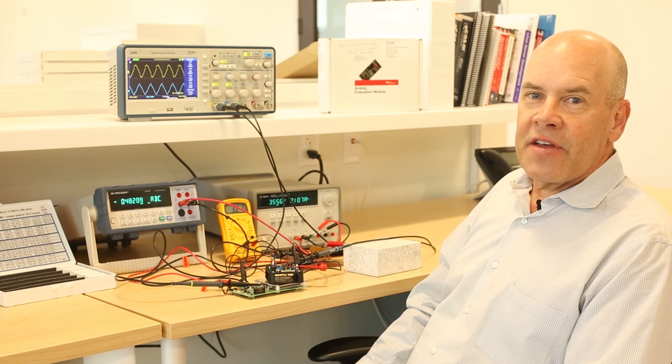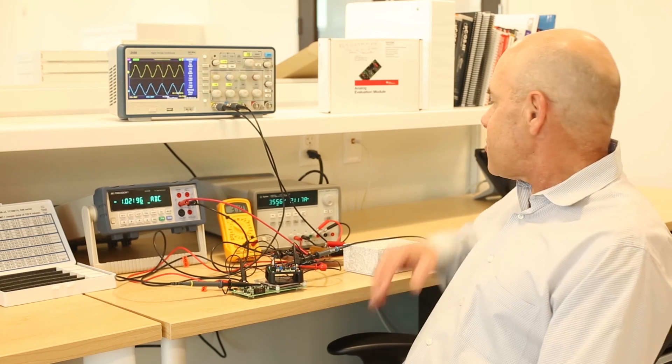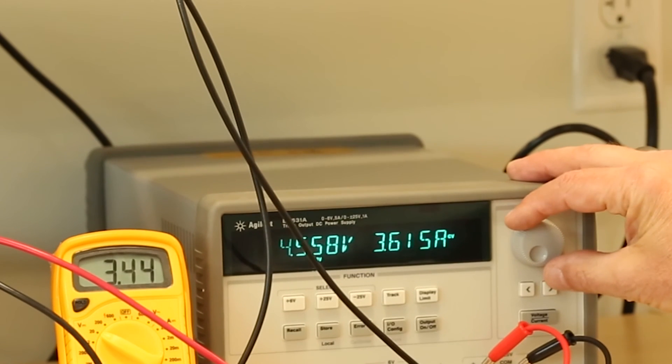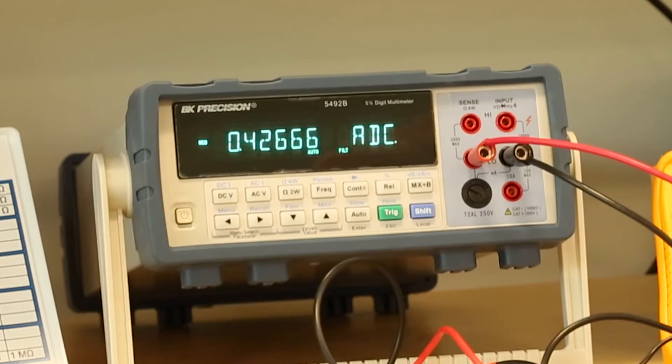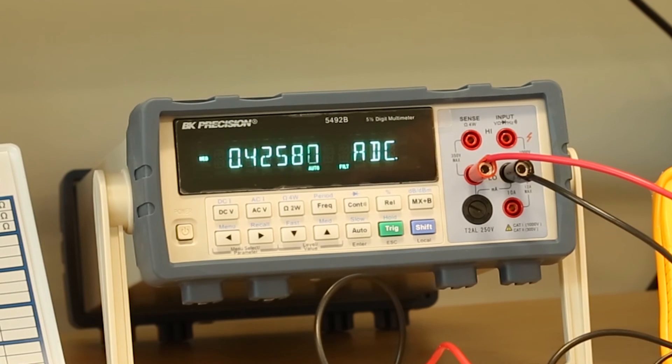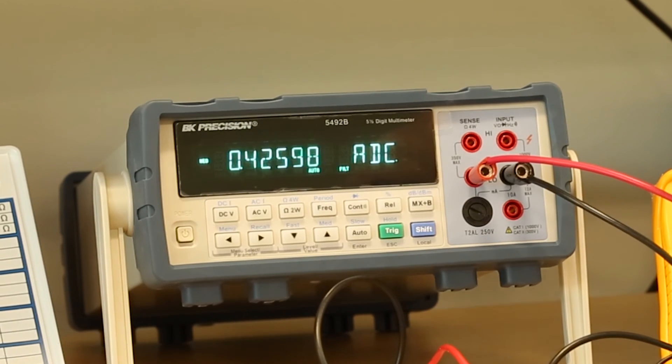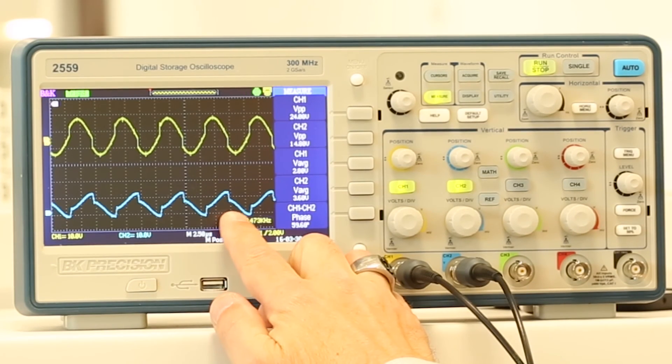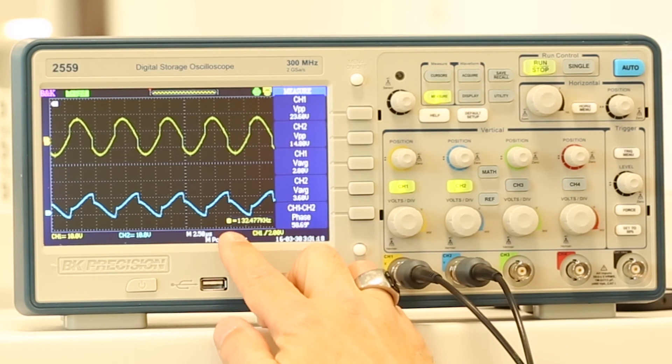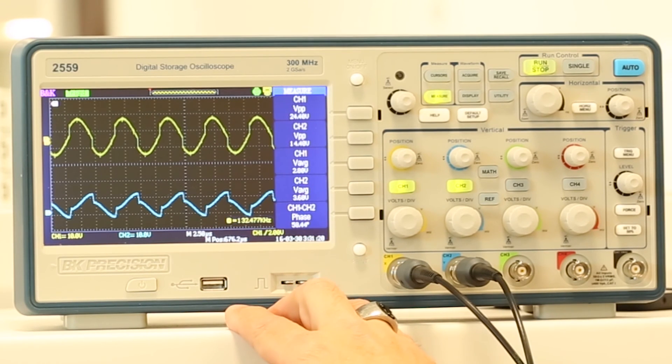Now let's increase the voltage across the load to 4.1 volts. This corresponds approximately to the onset of the constant voltage mode of operation. As we can see, the charging current is reduced to 420 milliamps or so. Also, as you can see on the bottom trace in the scope, the amplitude of the received voltage is about 14 volts peak to peak.